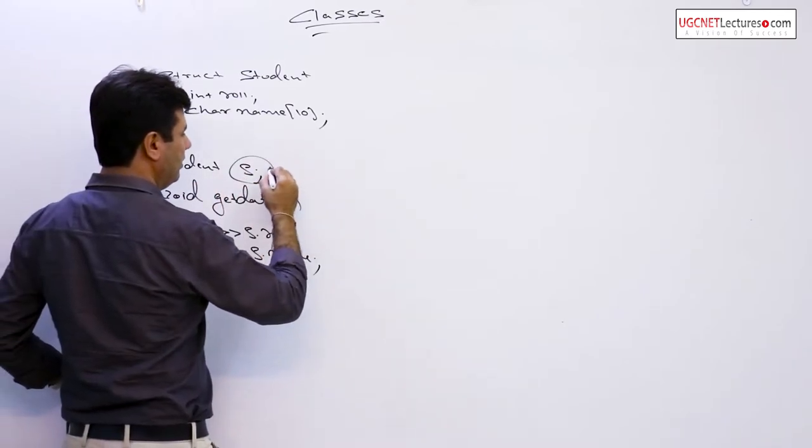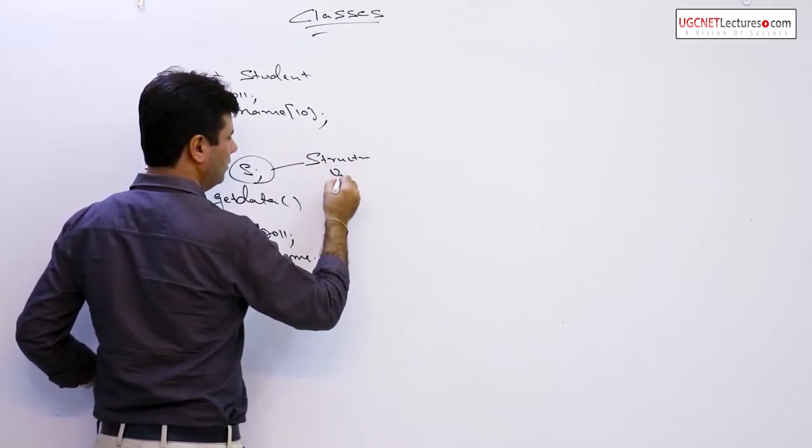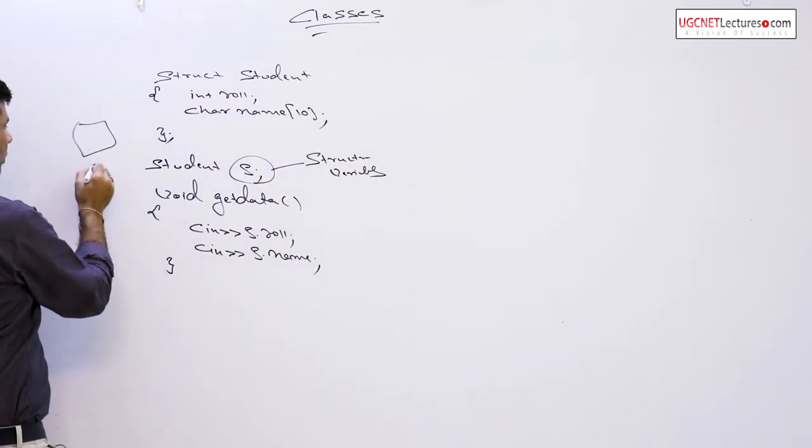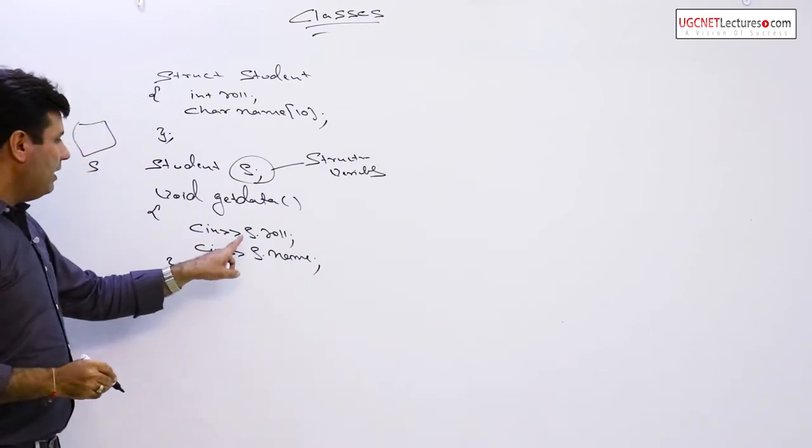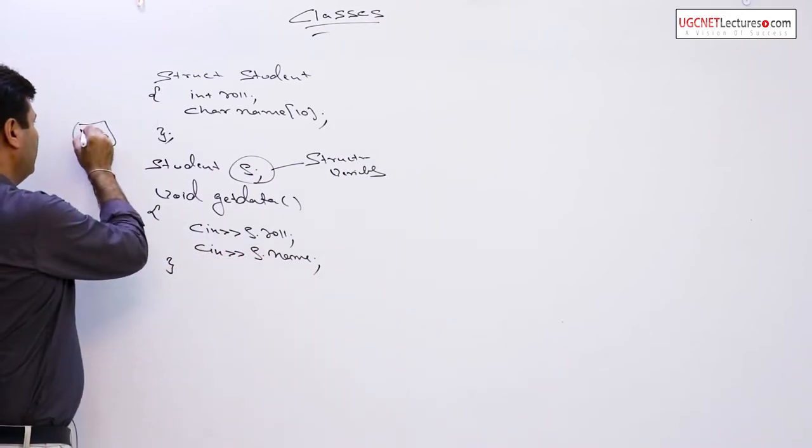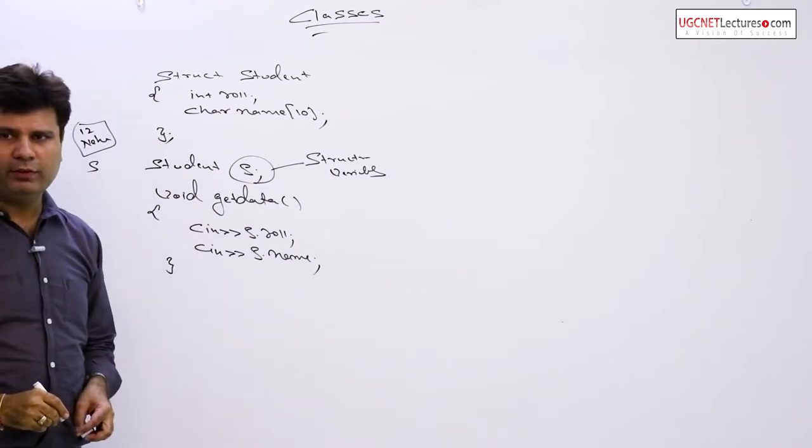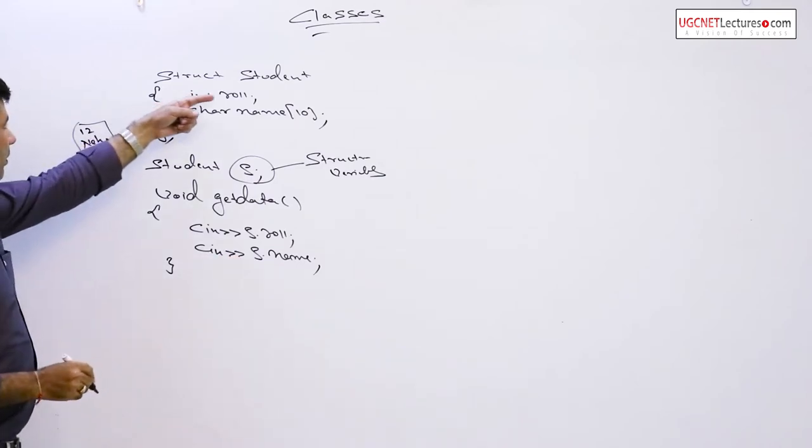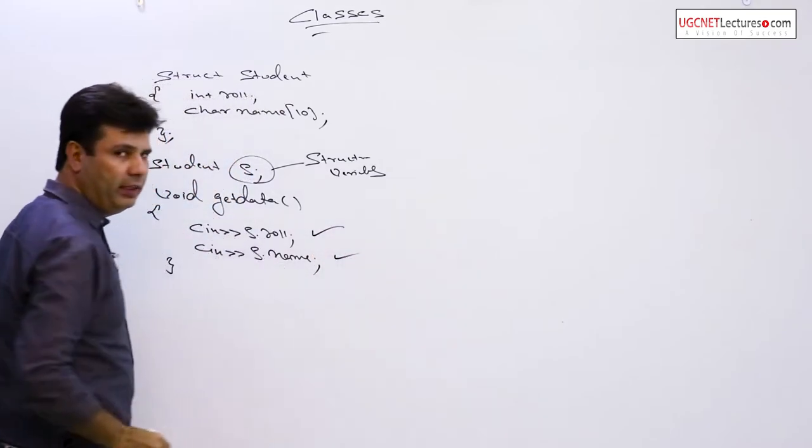Nothing is hidden, which can be easily accessed by providing the structure variable reference. This S is a structure variable which always provides memory for the elements. S dot role, S dot name, whatever you input. Role number is 12, the name is Neha, the two elements are there. Role number and name. This is absolutely fine in case of structure.